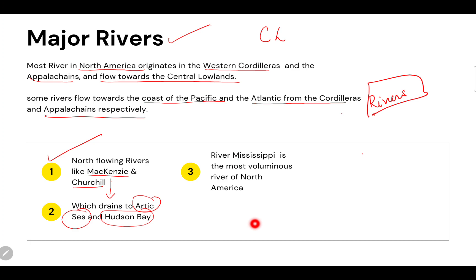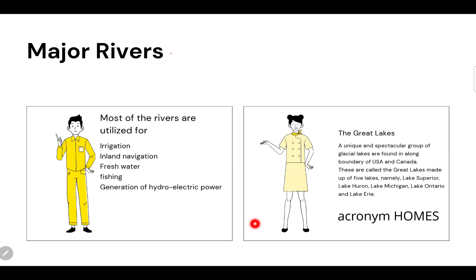The Mississippi River is the most voluminous river in North America — its water volume is very huge. These major rivers are mostly utilized for irrigation, inland navigation, freshwater fishing, and generation of hydroelectric power.